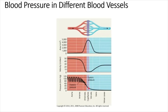Blood pressure decreases further in the capillaries. Capillaries have the highest total cross-sectional area and narrow diameter. Narrow diameter increases resistance, so blood flow velocity is the slowest in the capillaries. This allows time for the exchange of gases and nutrients in the capillaries.